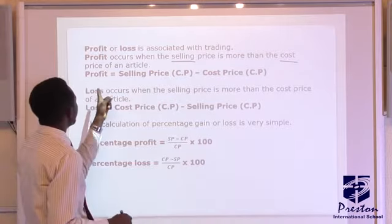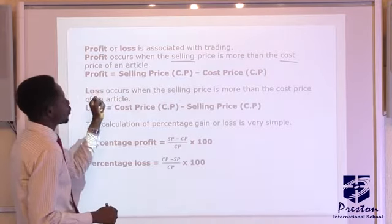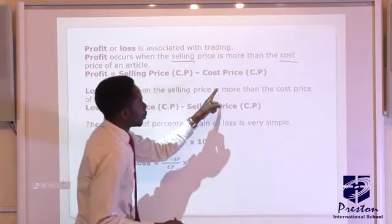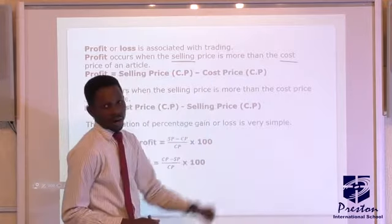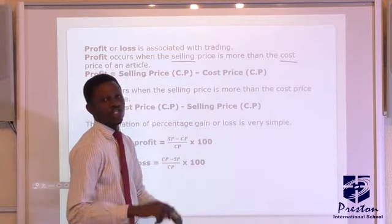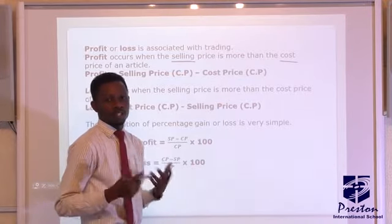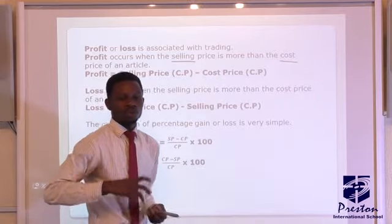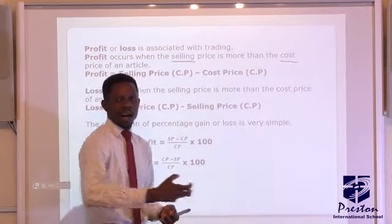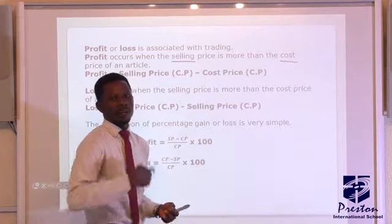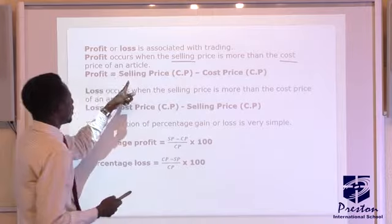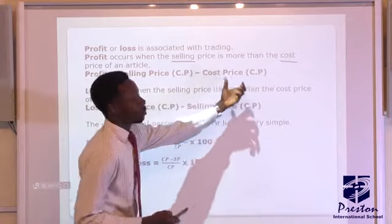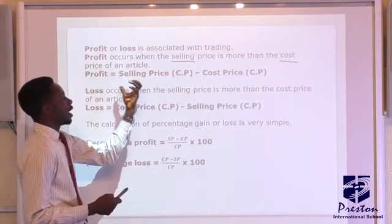The formula for profit is: selling price minus cost price. In each case, you should always get a positive result — you don't get a negative answer. That means you are subtracting the smaller amount from the bigger amount. So when the selling price is higher than the cost price, we subtract cost price from the selling price, and that means such a person has made profit.